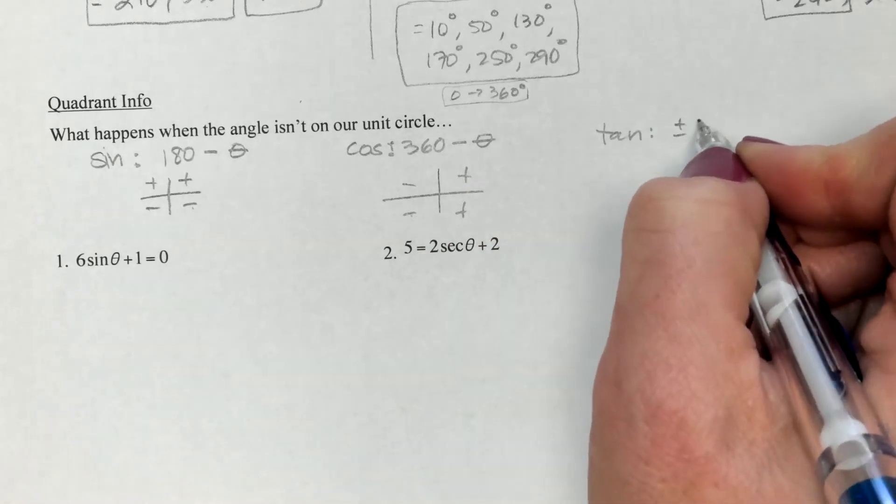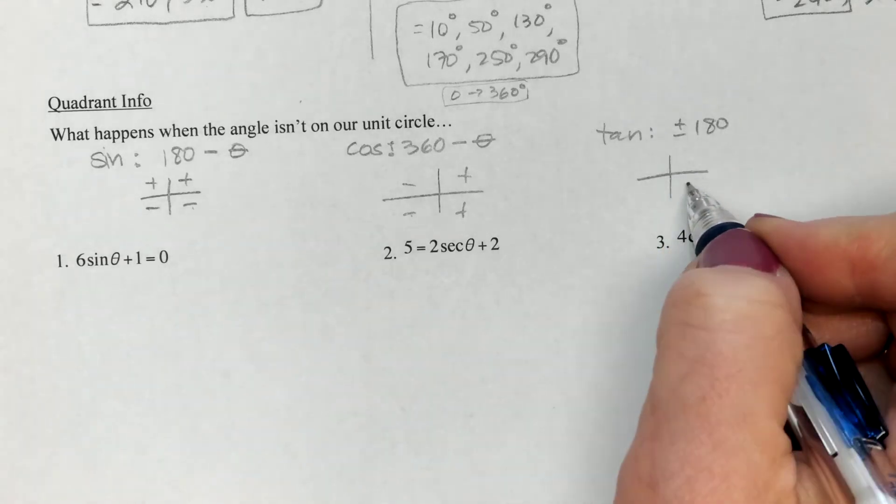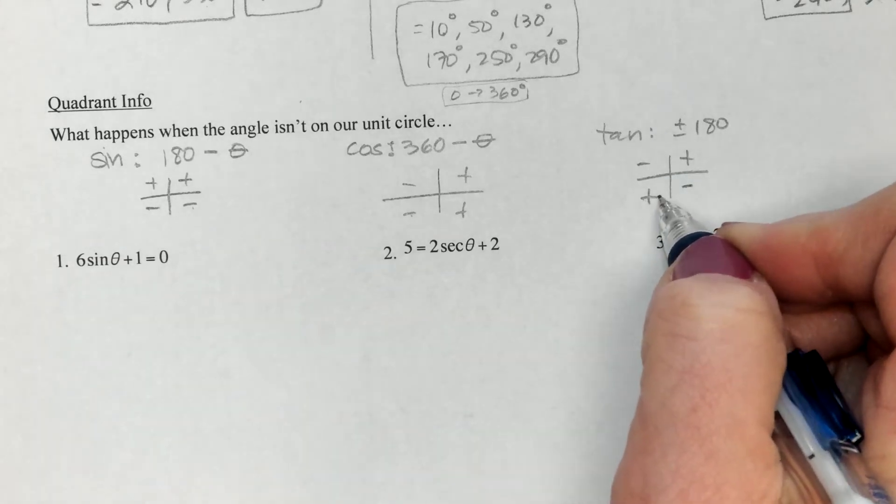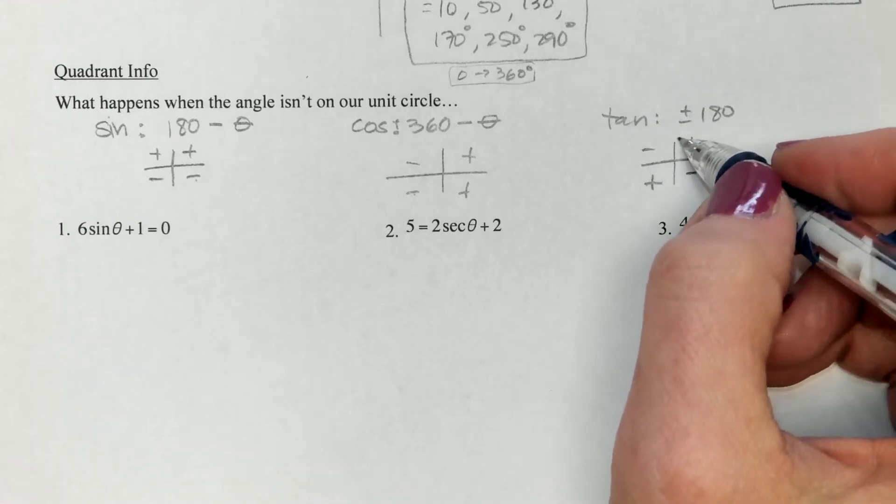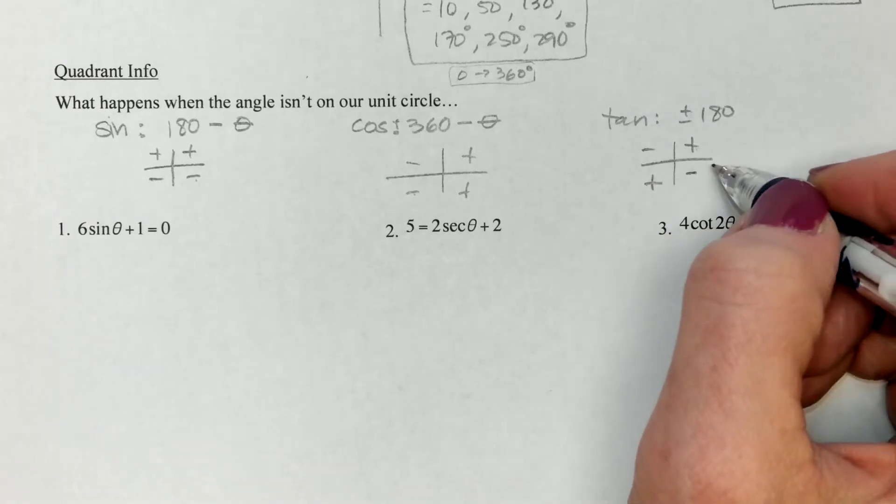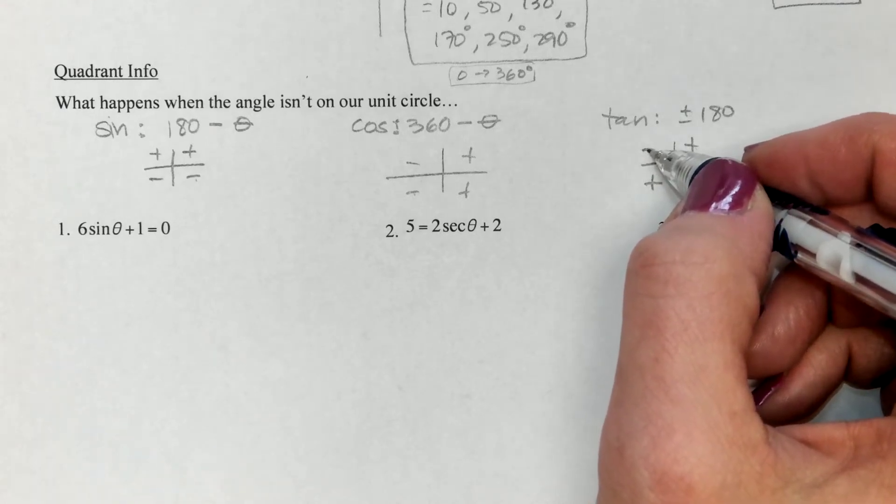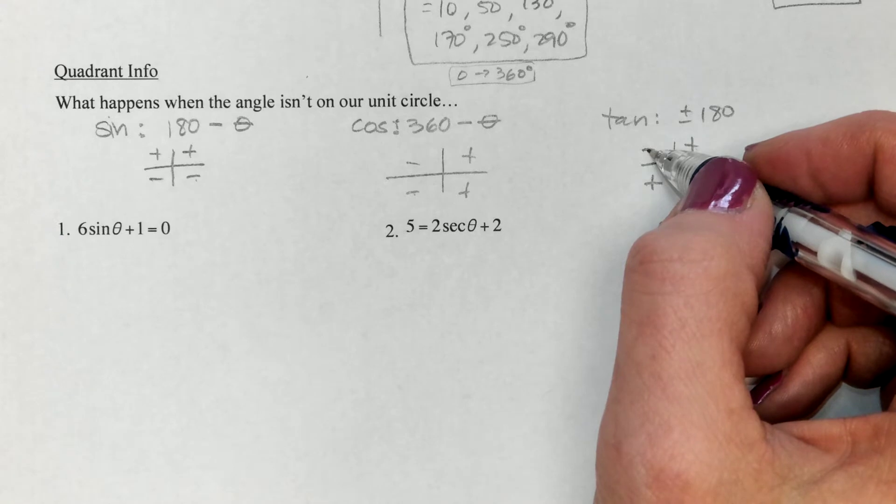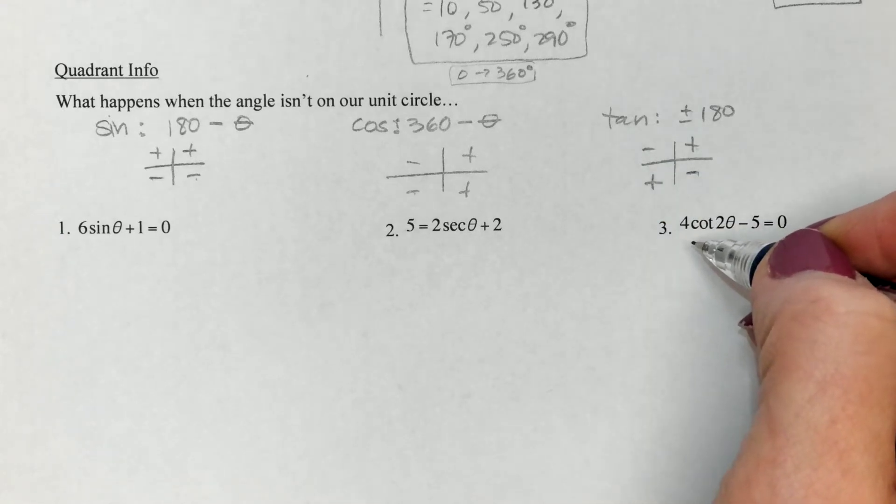Tangent is always a bear. It is either plus or minus 180, depending on which value your calculator gives you. If you get a value in the first quadrant, you can easily add 180. But if you get a value down here, you need to subtract 180 to go back. We'll do one of these so that you see what that looks like. I think we've got them all down here, ready to go.